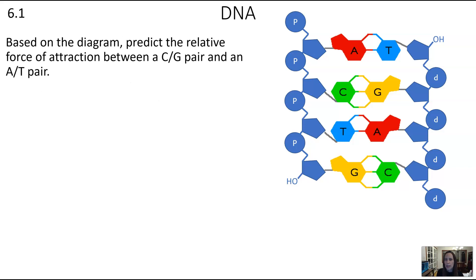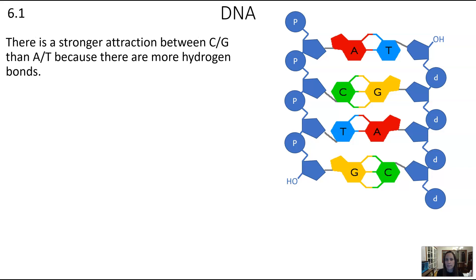Looking at the diagram, the relative force of attraction between a CG pair is stronger than between an AT pair because there are more hydrogen bonds. Between A and T we see two hydrogen bonds, and between C and G we see three. More hydrogen bonds means a tighter force pulling those strands together.